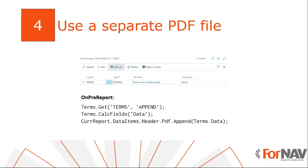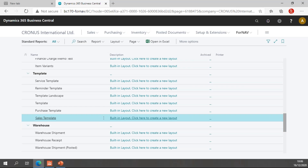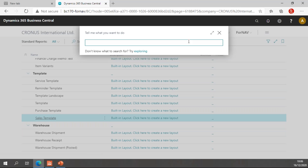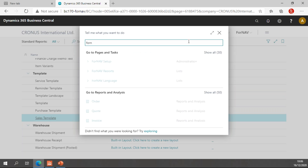Finally, we want to use a separate PDF file for our terms and conditions and append that to our report. A lot of customers have really big terms and conditions files, and it's easiest if we can simply append those to the reports. With Fornav 5.4 or above, we can do this. The first thing we need to do is add the file to our Fornav file storage table.